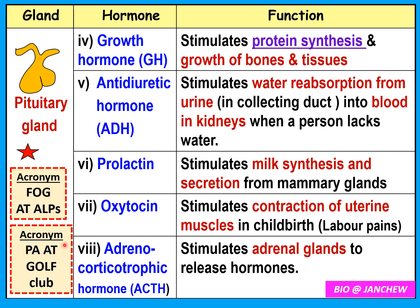Alternatively, you can use the acronym PA AT GOLF: P = Prolactin, A = ACTH, A = ADH, T = TSH, G = GH, O = Oxytocin, L = LH, F = FSH. Take your pick and memorize it. Test yourself to see if you can recall all eight hormones from the pituitary gland, and review it constantly to help you remember.